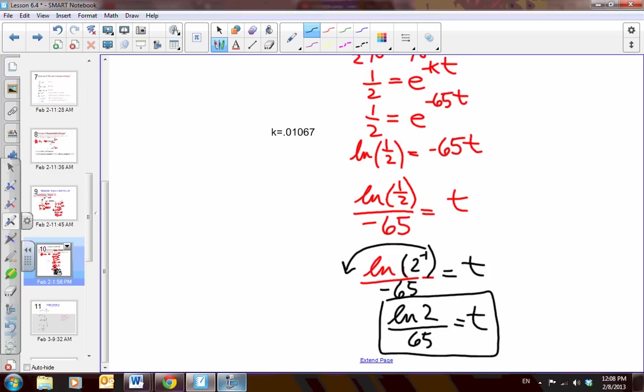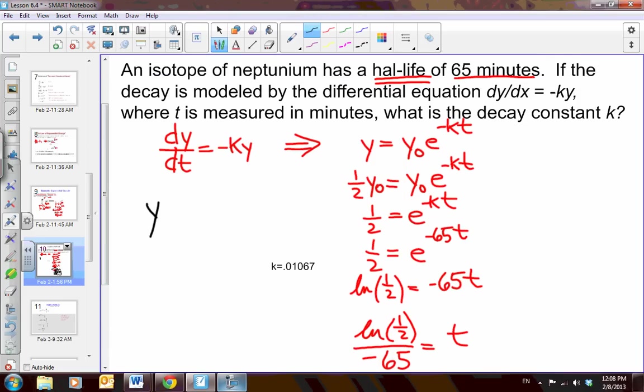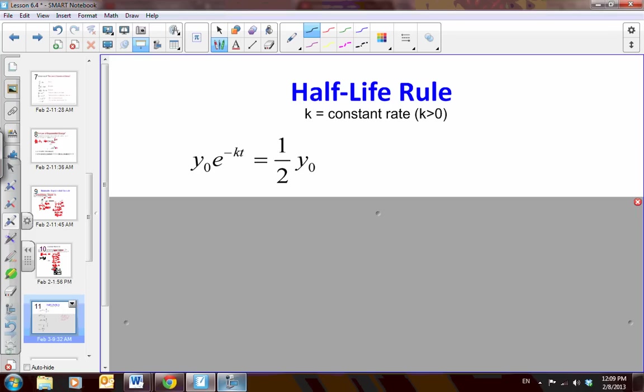Now, do you notice how this relates to the original problem? We end up with the half-life is natural log of 2 over 65. Well, look, 65 is the amount of minutes. So, you know what? We can actually find a formula that works for all of half-life. So, let's put our mathematician's hat on. And here is the original problem.